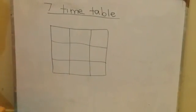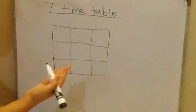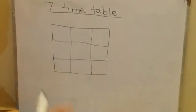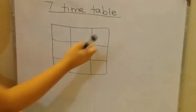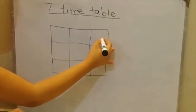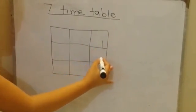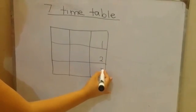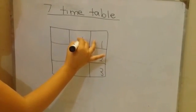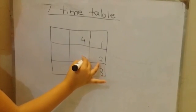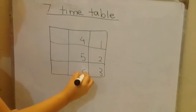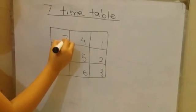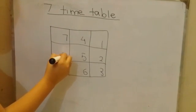So now we are going to write counting from 1 to 9 from the right side: 1, 2, 3, 4, 5, 6, 7, 8, 9.